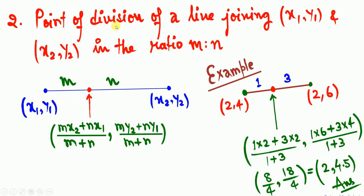Next, we have the point of division of a line joining (x1, y1) and (x2, y2) in the ratio m to n. Suppose a line has endpoints with coordinates (x1, y1) and (x2, y2), and a point divides this line into two zones in the ratio m to n. To find this dividing point, apply the formula: (mx2 + nx1)/(m + n), (my2 + ny1)/(m + n).